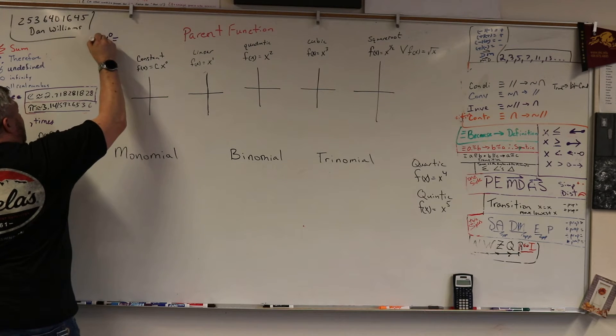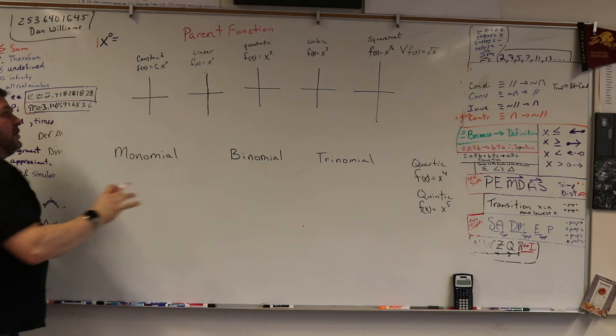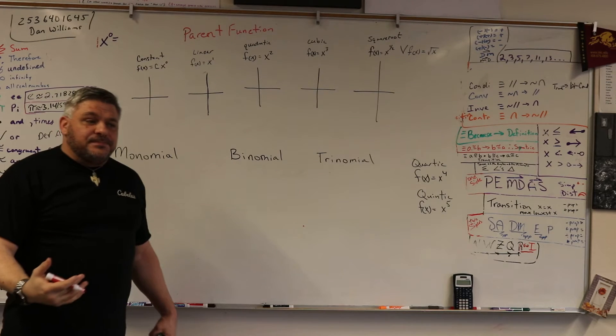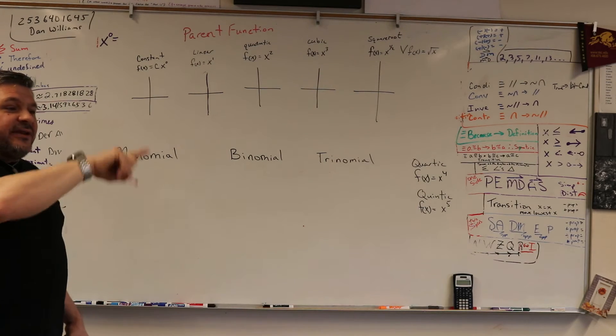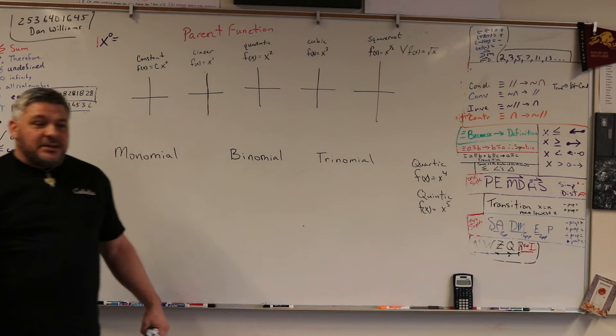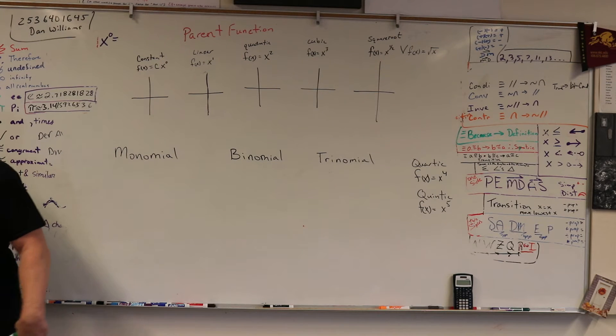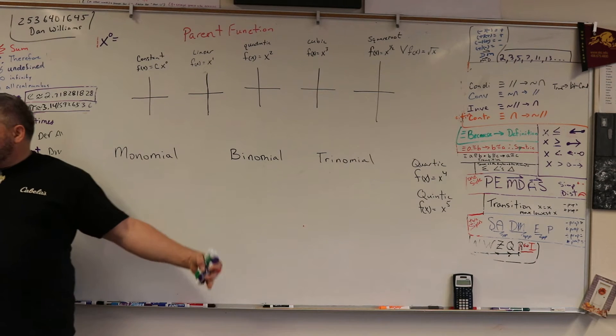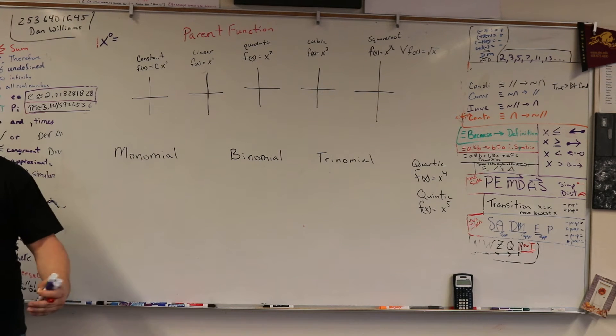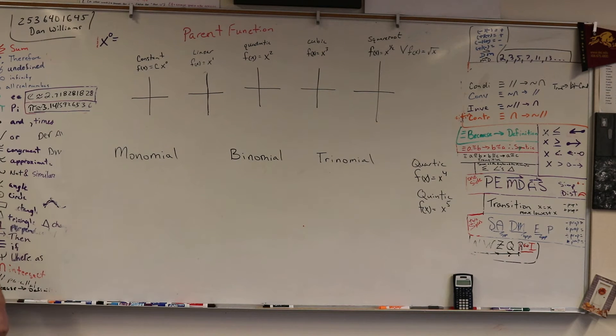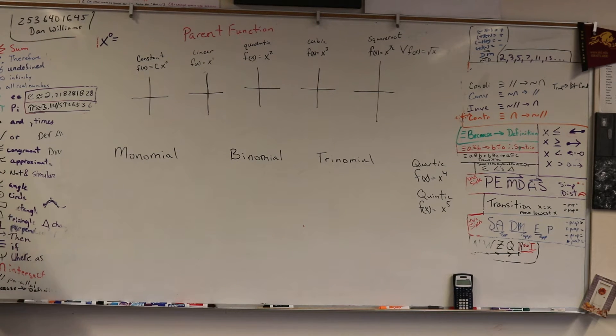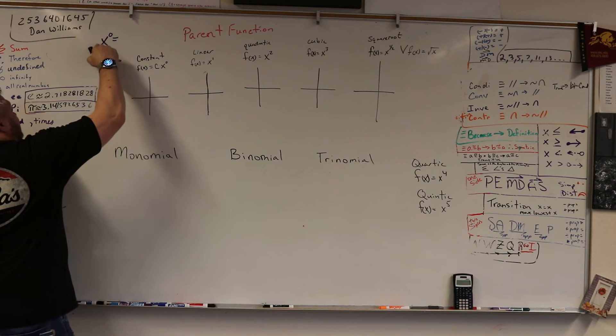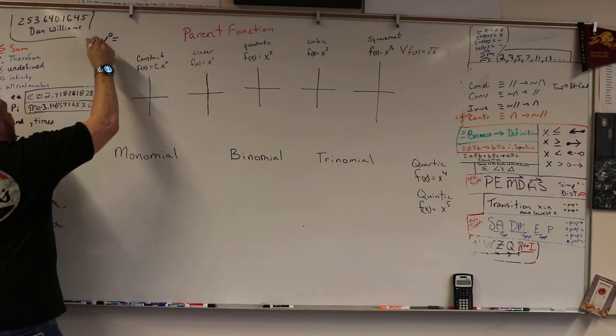So remember how we talked about that there was no such thing as a negative number? That all we had was negative one times the constant, the constant of two or the constant of this, and then that created the whole integer race, right?